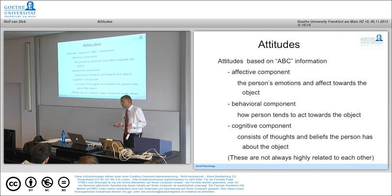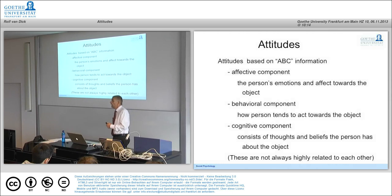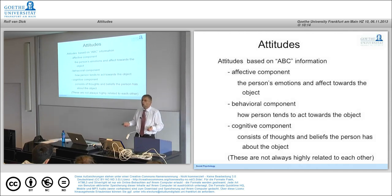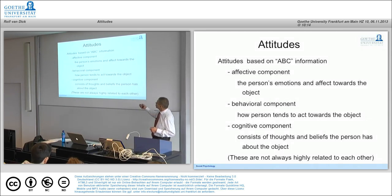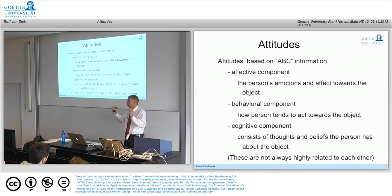These components are not always highly correlated. Sometimes you have cognitions where you think she's quite a good chancellor because she handled the financial crisis well, but you may still not like her and therefore won't vote for her. Or conversely, you may hold negative cognitive components — you didn't like how she handled nuclear energy — but you may like her because she's a better chancellor than the men before her, so you vote for her despite negative cognitions. Sometimes these components are strongly related; sometimes they are not.